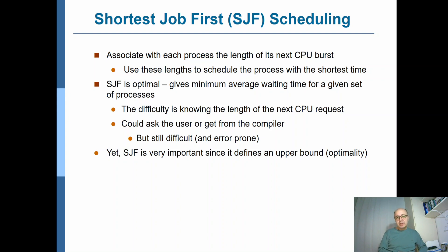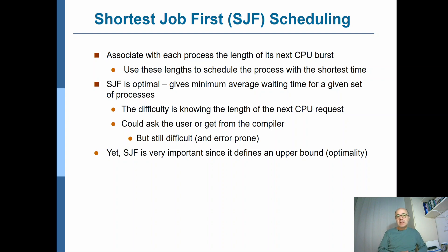The difficulty in the Shortest Job First scheduling approach is knowing the length of the next CPU request. So how would you know that value? One solution could be asking the user, but how would the user know? An alternative approach is that the compiler may calculate the length of the next CPU burst, since it knows the instructions, and place that information in the binary executable code so that the scheduler may look at that value and make the decision accordingly. But this is still difficult.